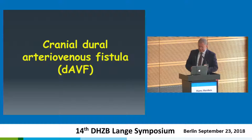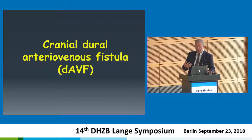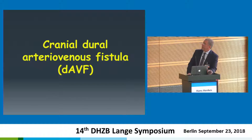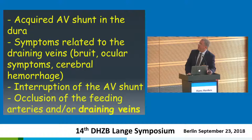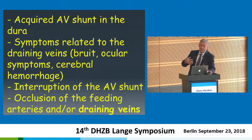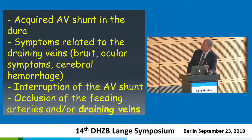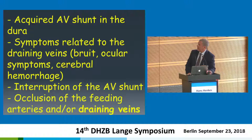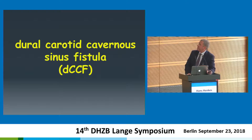Dural fistulas. We sometimes see children with dural fistulas, but by definition they are not congenital — they could be quiet during gestation or intrauterine life, but they are acquired lesions. The symptoms are exclusively related to the veins. It may be bruit, which is related to the high shunt volume, or ocular symptoms, or they can cause cerebral hemorrhage. As always, interruption of the shunt either from the arterial or the venous side is the key purpose of treatment.